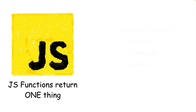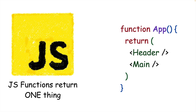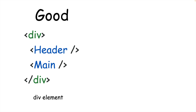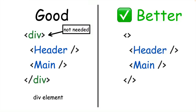Since JavaScript functions can only return one thing, in React you can only return one parent element from a component. We could fix this by wrapping these components in a div, but maybe you don't want to add another element to the page. Instead, you can use an empty component called a React fragment.